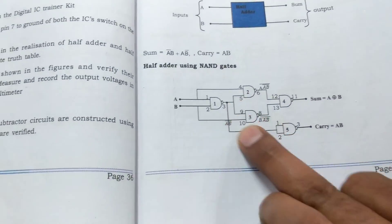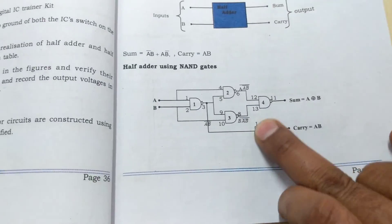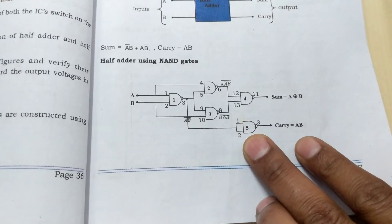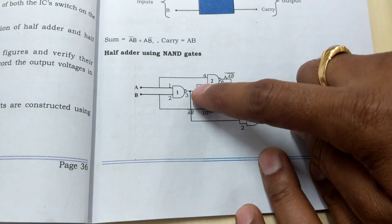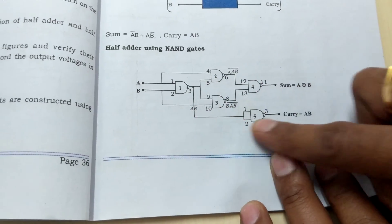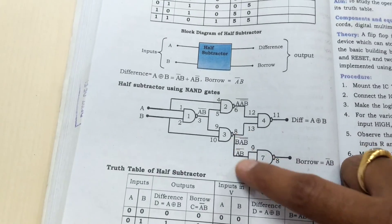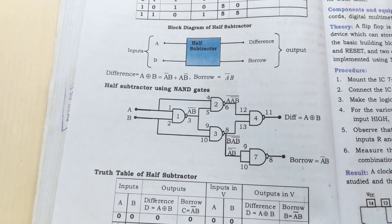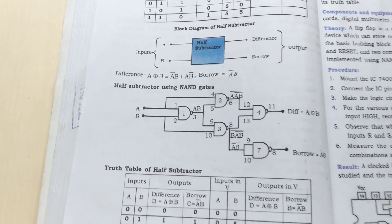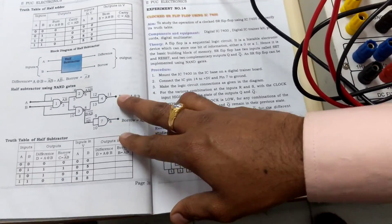So to summarize: for the half adder, pin 3 of the first IC is connected to the second IC. For the half subtractor, from pin number 8 we make the second connection. This is how we implement both half adder and half subtractor using NAND gates in a single circuit.